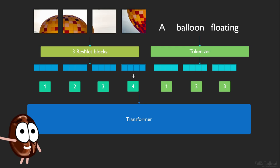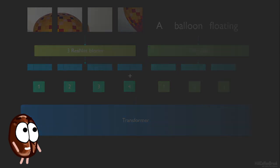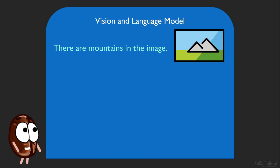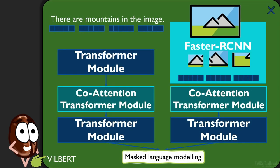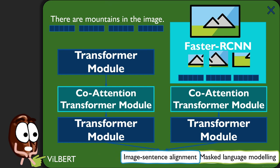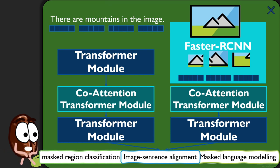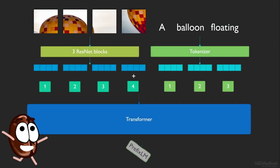Moving on to the next contribution of the paper. The authors highlight shortcomings of existing work in that it uses multitask learning by formulating multiple losses, like masked language modelling — where words are masked and the model, now informed also with the image, has to predict what a masked word should be — or the task of image-sentence alignment, or masked region classification and others. But SimVLM does not need all this; it can get away with one single objective, which is the so-called Prefix Language Modeling objective.